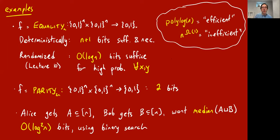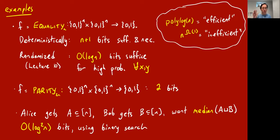To orient you: since every function over n-bit inputs can be solved using n+1 bits, we generally think of communication protocols using poly-log n bits as efficient — the analog of P for communication complexity. Protocols using a polynomial number of bits like linear, square-root n, or n^0.1 bits are considered inefficient. Most normal problems fit one of these two categories, so the rough guideline is: strive for poly-log n bits.